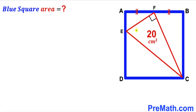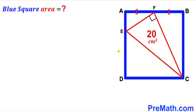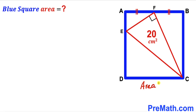Welcome to pre-math. In this video we have a right triangle EFC fully confined in a blue square ABCD, as shown in the diagram. The area of triangle EFC has been given as 20 cm². Moreover, segment AF length equals segment BF length. Our task is to calculate the area of the blue square ABCD.